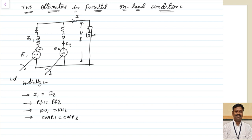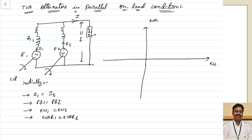So when changes happen, how are they going to change? Before going to that, let us see what the A-colon diagram looks like. I am representing kVAR on the y-axis and kilowatt on the x-axis. Let us assume in both cases the terminal voltage is the same — I am taking this as voltage V, same for the second generator.